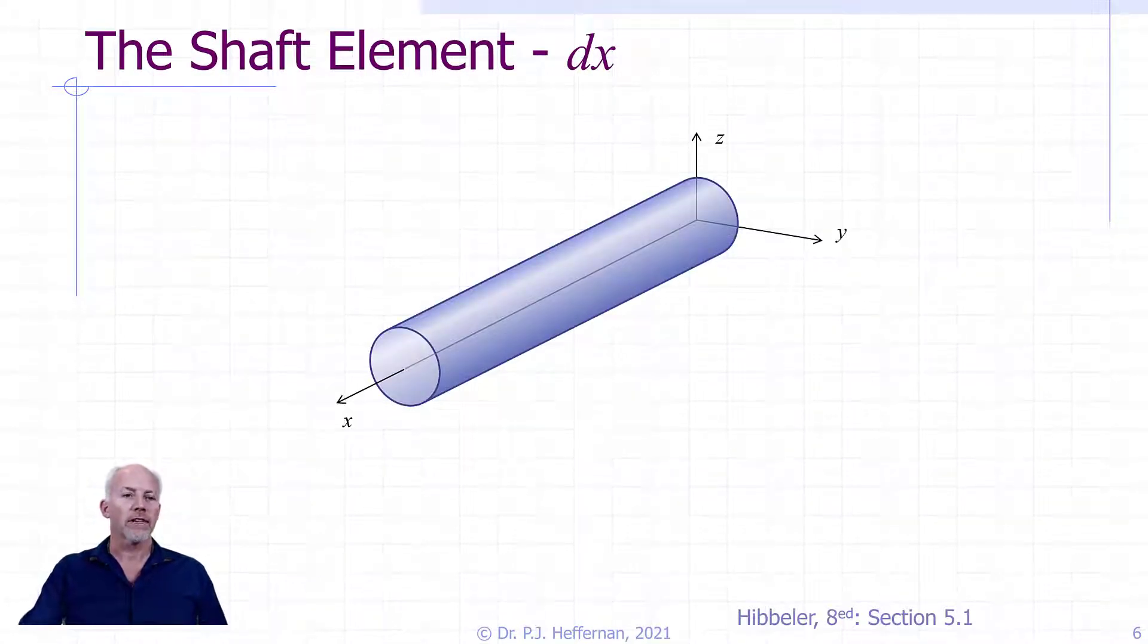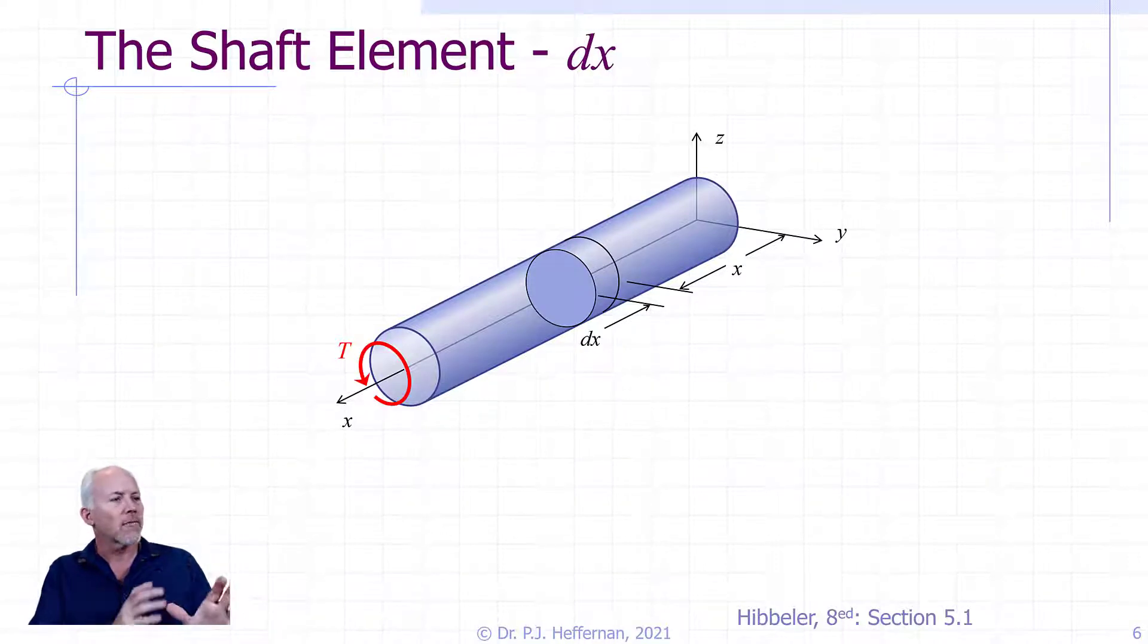In considering the effects of torsion, let's look at a prismatic bar loaded with a constant torque T over its length. We will consider an infinitesimally thin slice of the bar, dx, a distance x from the support. And for the next little while, this little thin slice is where we're going to focus our efforts.